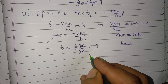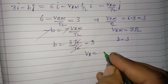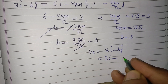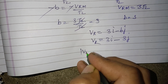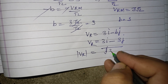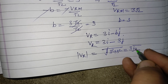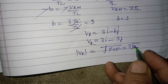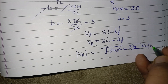The question asks for the speed of rain. In vector form, V_R equals 3i minus bj equals 3i minus 3j. Taking its magnitude: root of (3 squared plus 3 squared), which equals root of (2 times 3 squared), giving us 3 root 2 kilometers per hour.